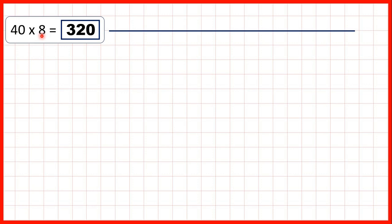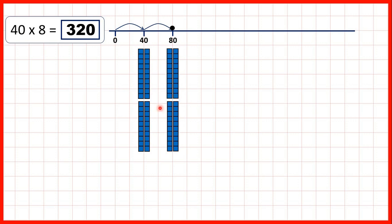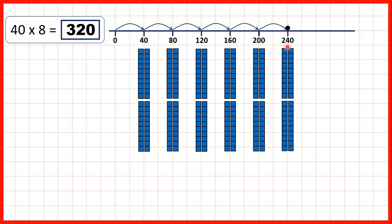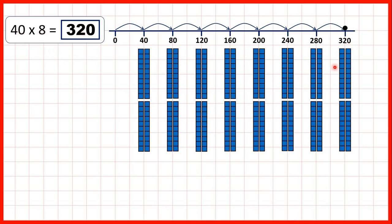Then we had 40 times 8, which is the same as 8 times 40. Counting in steps of 40, we can show 4 tens below each count. Adding another 4 tens gives us 8 tens, so that's 80; then 120, 160, 200, 240, 280, and then 320. We made 8 jumps of 40, taking us to 320 because we have 32 tens, which we can regroup into 3 hundreds and 2 tens. So counting in steps of 40 is just like counting in steps of 4.